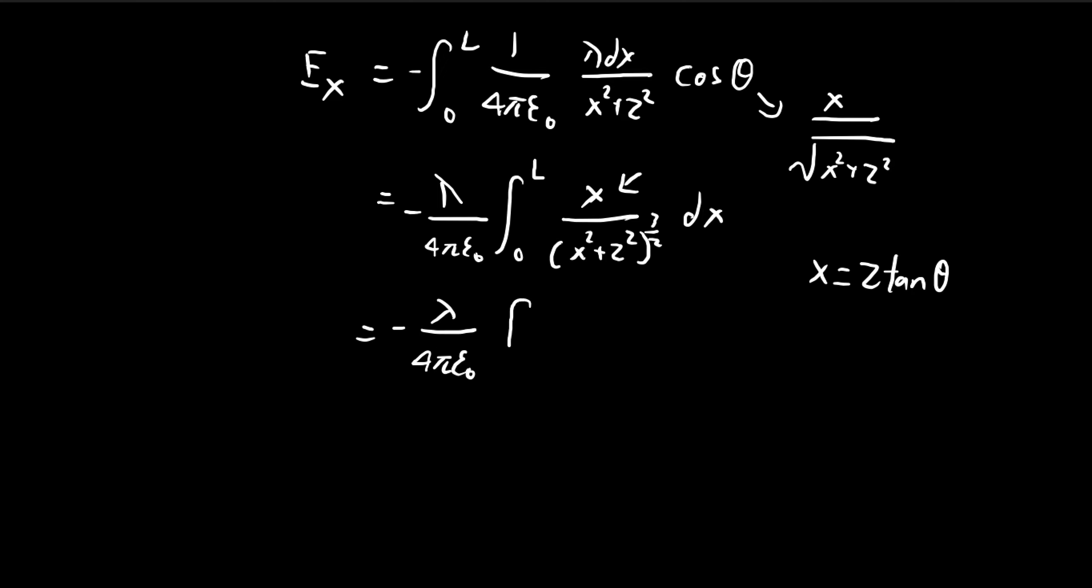So doing that, the bounds we change it the same way we did before, 0 to alpha. For x, we get z tangent of theta. For the denominator, we get z to the power of 3, and then a secant to the power of 3. And for dx, we get z secant squared theta d theta. So this is just exactly the same thing we did for the y-direction electric field.